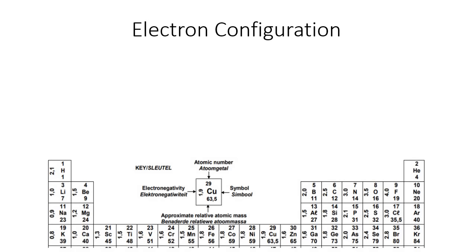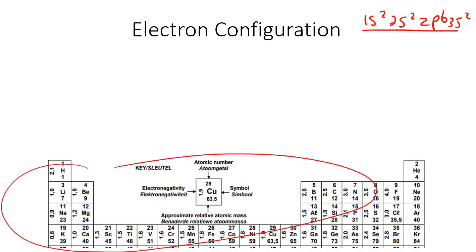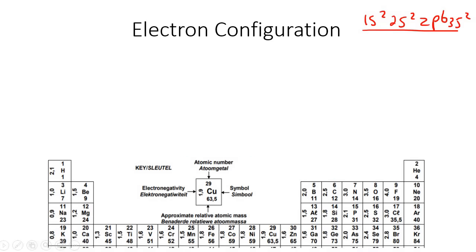Hey guys, hope you're well. So electron configuration looks weird, right? The stuff you've maybe been seeing in class with like 1s2, 2s2, 2p6, 3s2 — what does that all mean? Well, that's what we're going to speak about in this lesson. I promise you I'm going to make it super easy. It's actually really easy to understand where these numbers come from if you use your periodic table, and then it's literally like a little puzzle. It's actually quite cool.